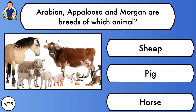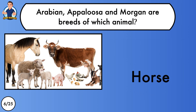Arabian, Appaloosa and Morgan are breeds of which animal? Sheep, pig or horse? And the answer is Horse.